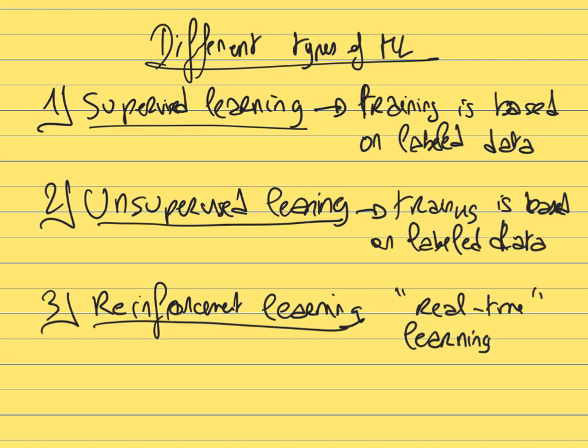In reinforcement learning, the computer makes actions and based on the feedback — reward or penalty — learns whether it was a smart or bad action. Examples include training a computer to play a video game or teaching a self-driving car model how to drive.